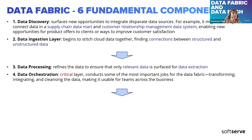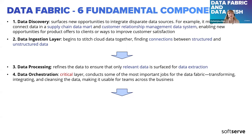The second group is data processing — we can call it the heart of data fabric. This is where data is refined to ensure only relevant data is available to the end consumer. Data orchestration is the critical layer that performs some of the most important jobs: transforming, integrating, and cleansing data. We can view it a little like ETL, making data usable for teams across the business.